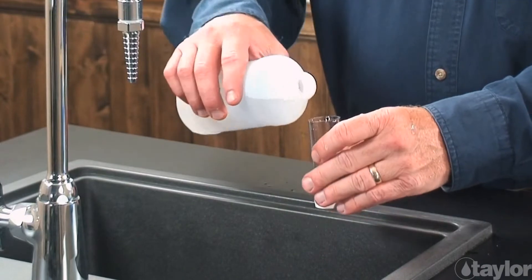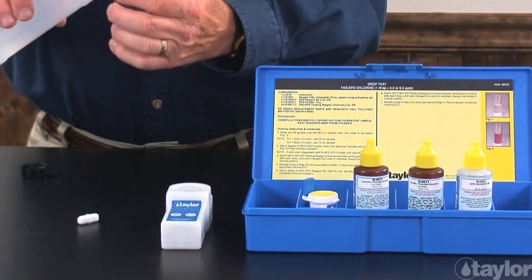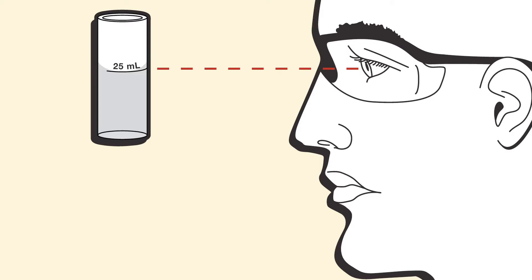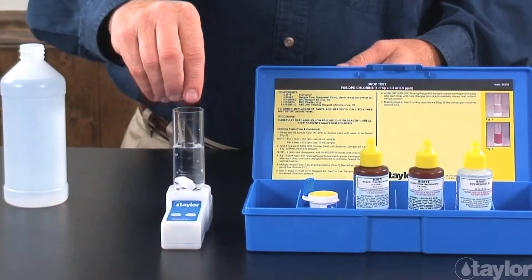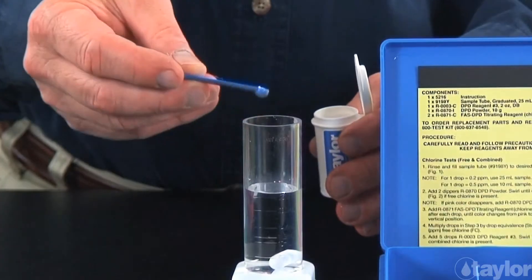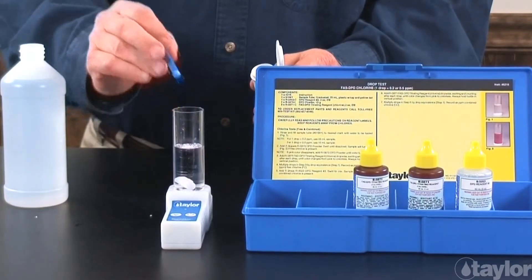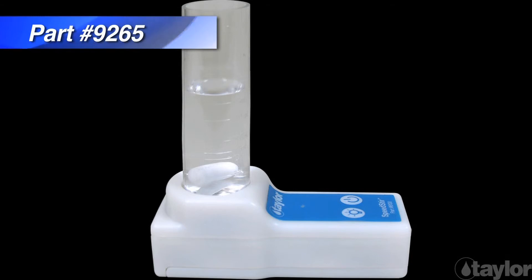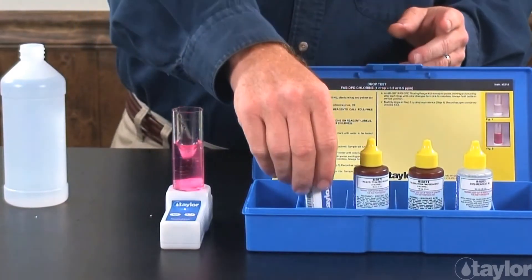Rinse and fill the number 9198Y sample tube to the 25 ml mark with the water to be tested. Add two dippers of DPD powder. The scoop end of the dipper should be completely filled with the powder, but beyond this, a precise measurement is not necessary. Swirl until all of the powder dissolves. For this demonstration, we are using Taylor Speedster, which is sold separately, but you can also manually swirl the sample.